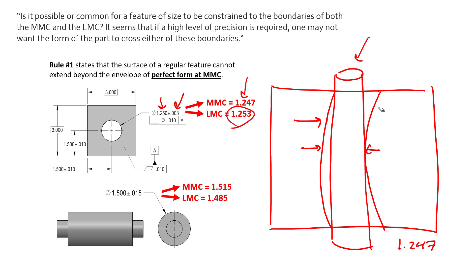So we control it to an envelope for assembly reasons. We control to that MMC envelope for assembly reasons. Now if we want to try and control it to LMC, the only reason you would want to do something like that or worry about the LMC is likely because of wall thickness.